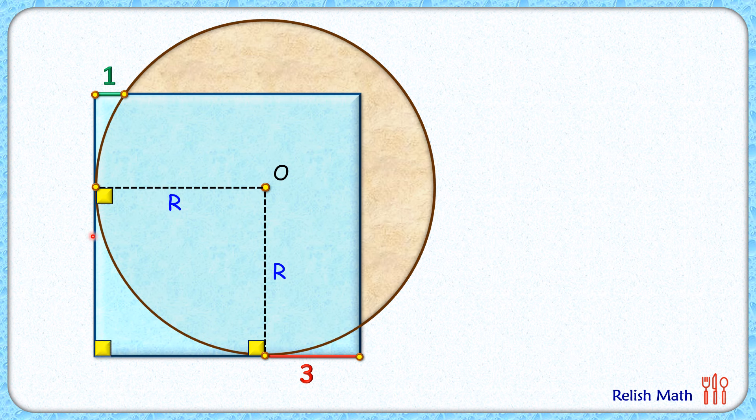Now for this bigger blue square, the full side length is R plus three, and so this remaining height here is same as three centimeters.